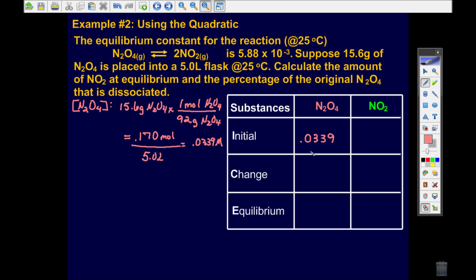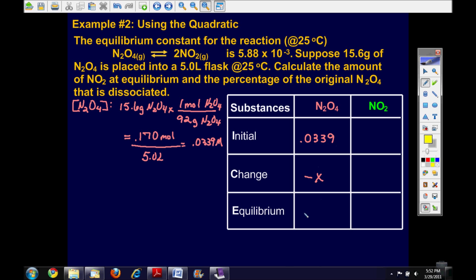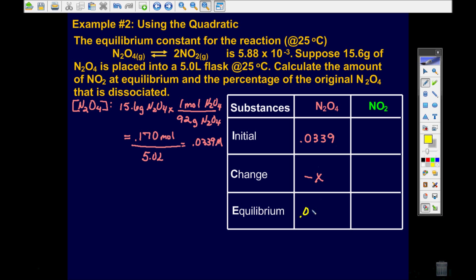Now, initially, this is the concentration, and it's going to lose a certain amount. It's going to be converted into the product NO2. You don't know what that amount is, so we're going to call it X. So it's going to lose amount X. So at your equilibrium, it's going to be this 0.0339 minus that value X.